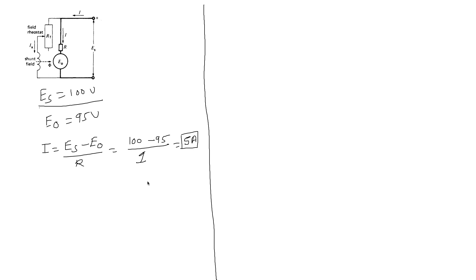Now the motor is running at its rated speed. Suppose we suddenly increase the field resistance RF. By Ohm's law, the excitation current Ix will drop. Once the current drops, the flux will also drop, because flux is directly proportional to current. Since the flux in the machine is now less, the back EMF generated will also be lower.